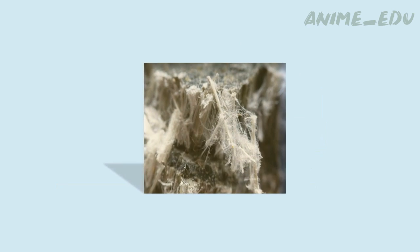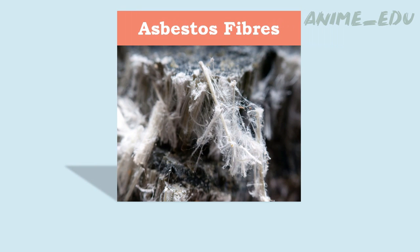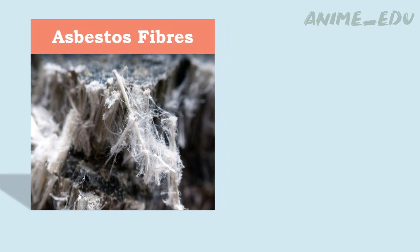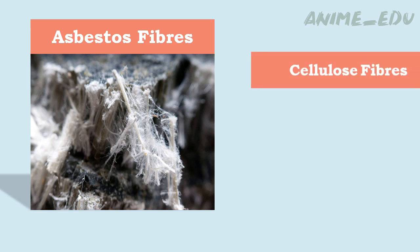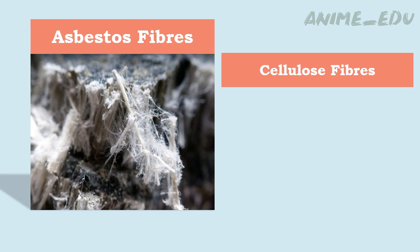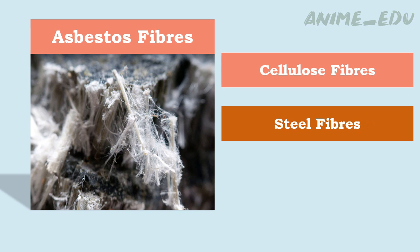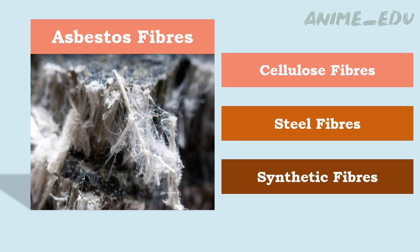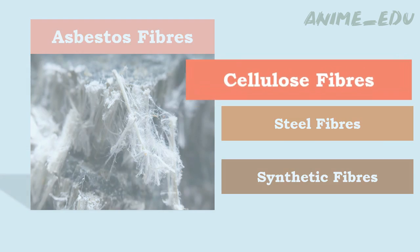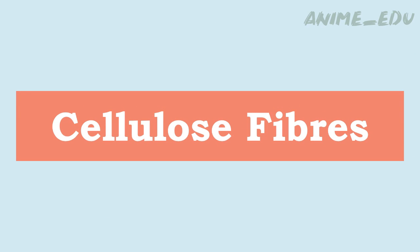Originally, asbestos fibers were commonly used in the manufacture of fiber cement. Later, due to the ill effects of asbestos, they are being replaced by cellulose fibers, steel fibers, and synthetic fibers, with cellulose fibers now being used most commonly.